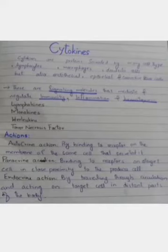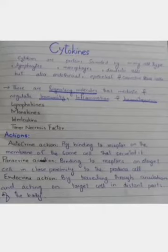Cytokines have an important role in immunity, in inflammation, as well as in hematopoiesis. Hematopoiesis is the formation of the blood cells, in acute inflammation as well as in chronic inflammation. Cytokines are basically a general name. Other names are given on the basis of their presumed function, their cells of secretion, or target of action.